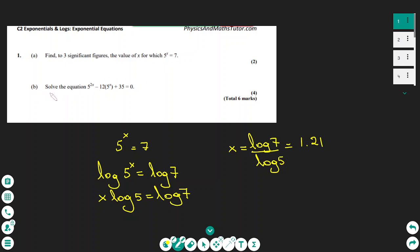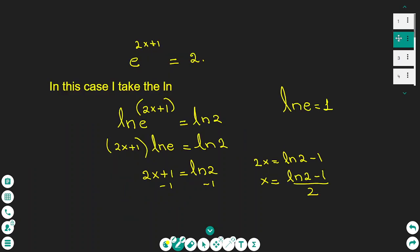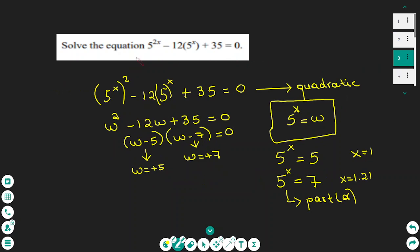The second part: we need to solve the equation 5 to the power of 2x minus 12 bracket 5 to the power of x plus 35 equals 0. We need to make a substitution to change this equation into a quadratic. We can write this as (5 to the power of x) squared minus 12 bracket 5 to the power of x plus 35 equals 0.